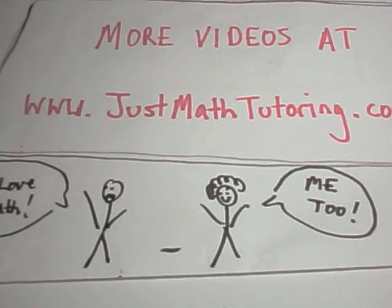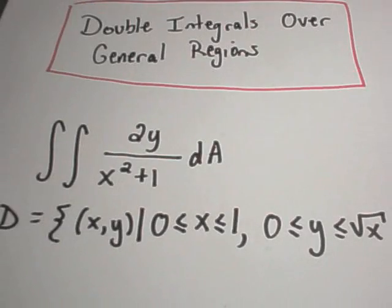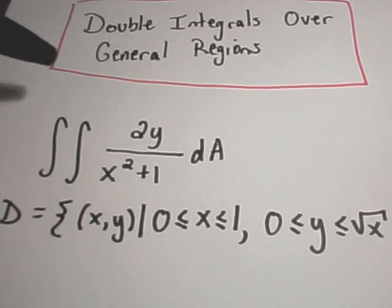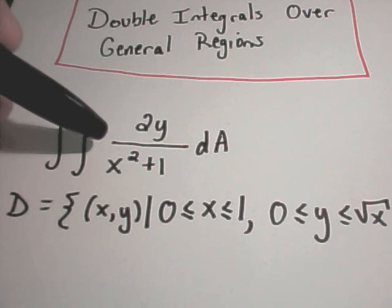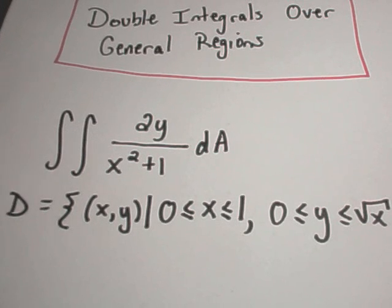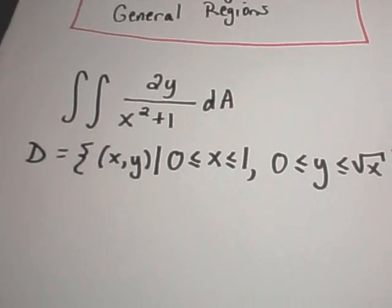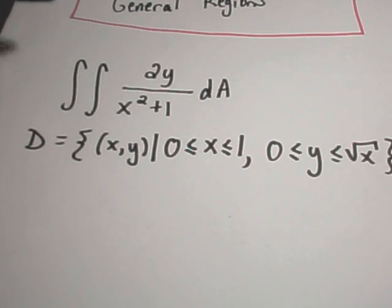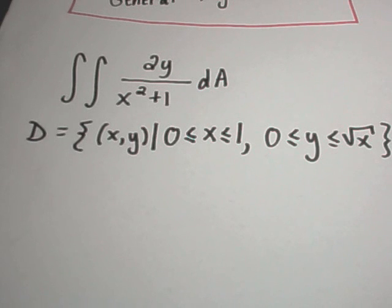In this video I'm going to talk about double integrals over general regions. In this case we're going to integrate the function 2y over x squared plus 1. The region is the set of xy coordinates where x is between 0 and 1 and y is between 0 and square root of x.